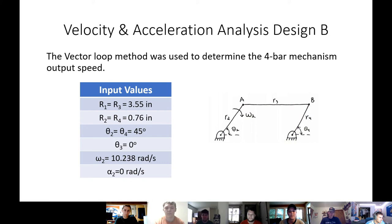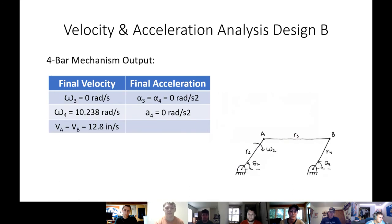So that in turn goes into our angular velocity 2. You can see the 10.238 there. And then the associated values with our geometric relations. And then here are acceleration values. And our final velocity and acceleration values. Our velocity was around 12.8, and our acceleration was 0 because we are not accelerating.